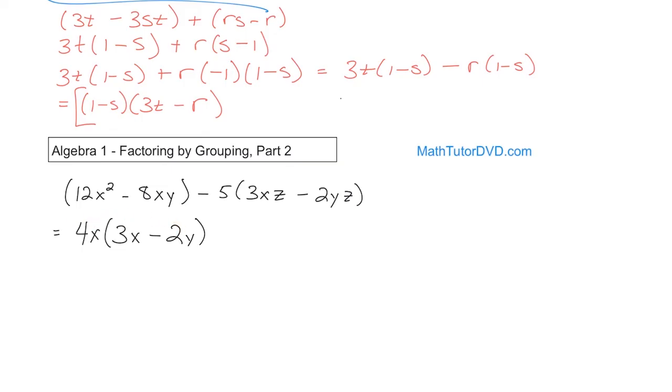Now, what I have here is a minus 5. What else can I pull out from here? I look. I have a 3 and a 2. That's not helping me much. I have an x. There's no x here. I have a z here and a z here. I have a y here but no y here. So really, the only thing common to both of those is a z. So I pull out a z like this. And so I pull out the z there, and what I'm left with is 3x on the inside minus 2y. Those are the only things that are left over there.